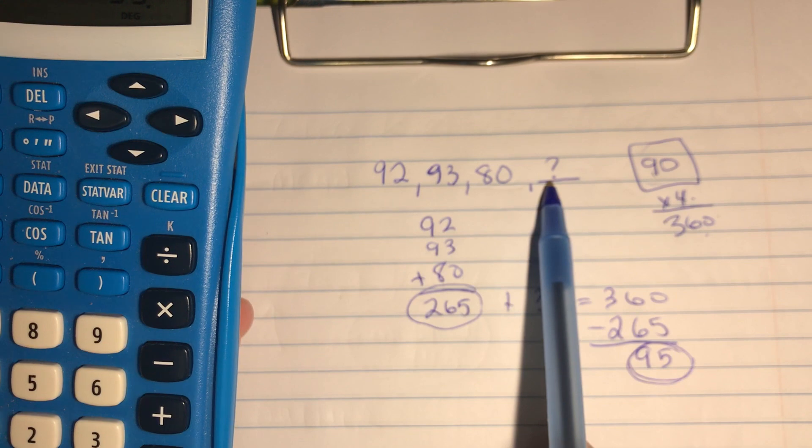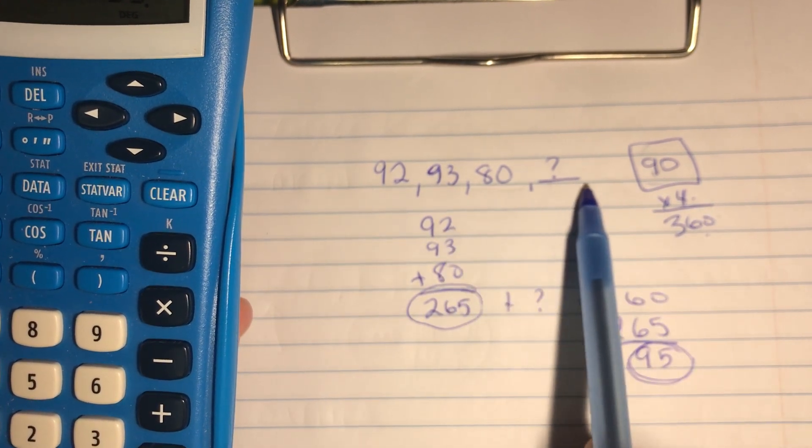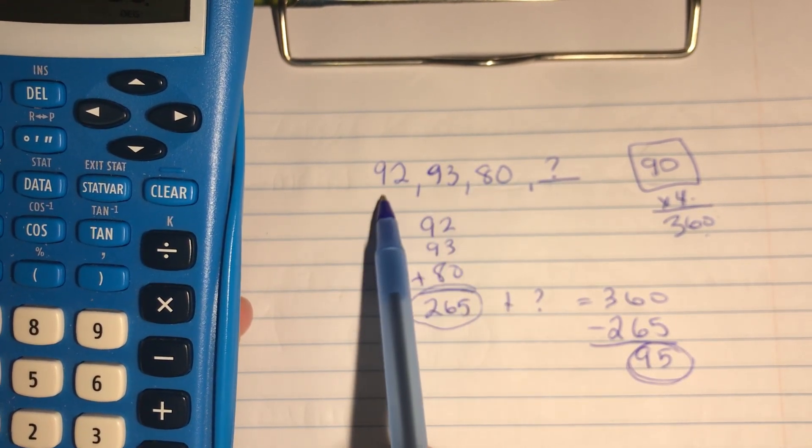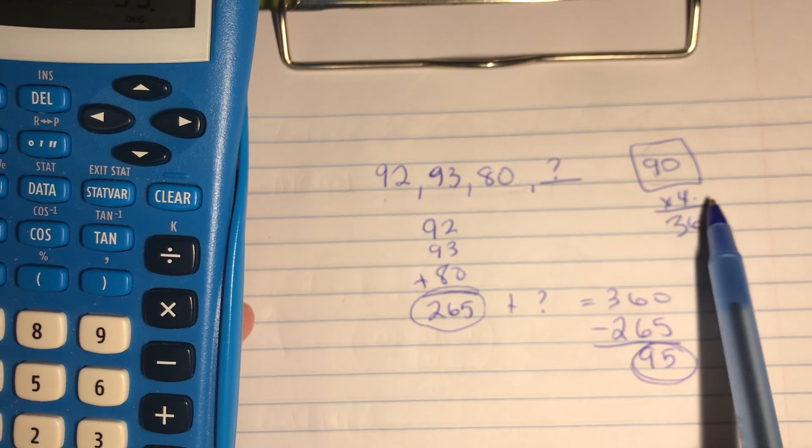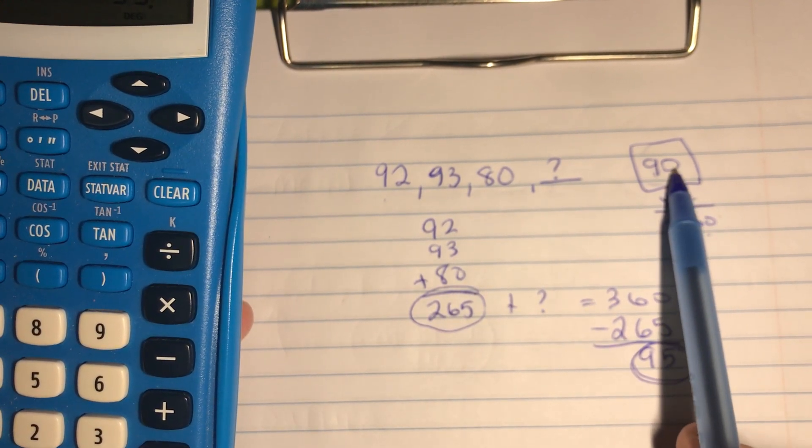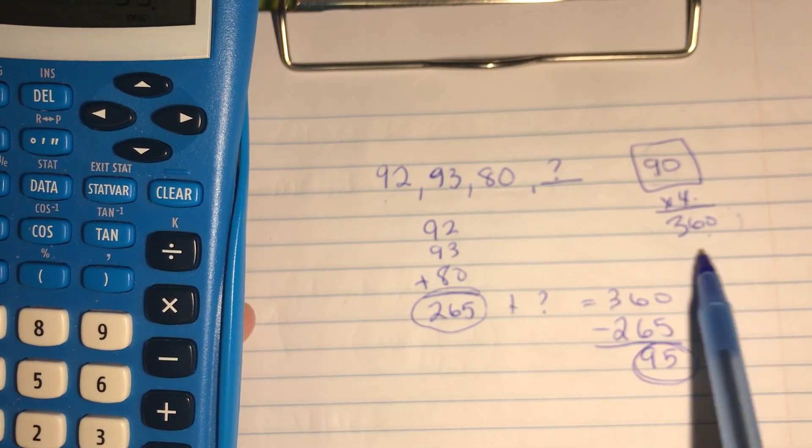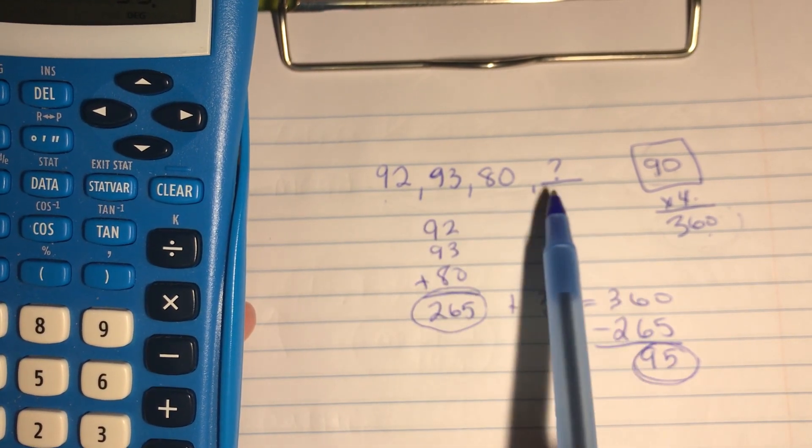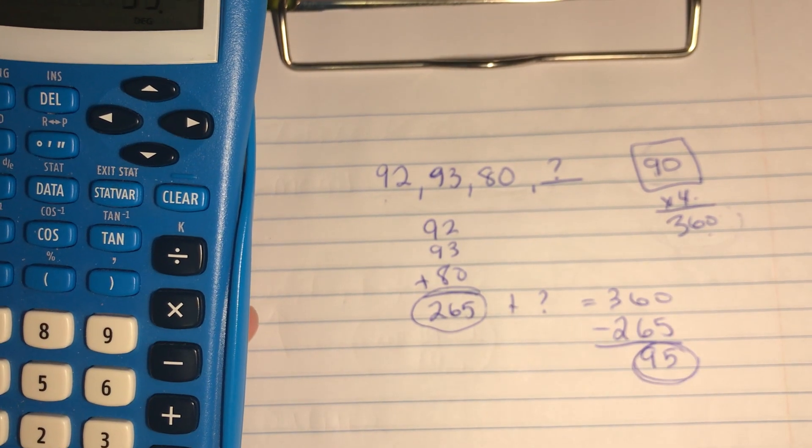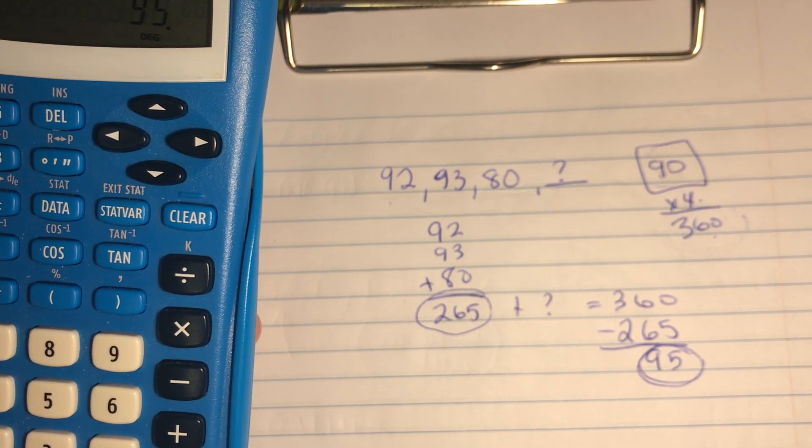So if you don't know something that's missing, find out how many you have total. One, two, three is not the total—there's gonna be four tests total, multiplied by the average you're trying to aim for. Get that number right there. Make these numbers and this number—make this plus this total to this. So if that makes sense, you're kind of just working backwards on this one.